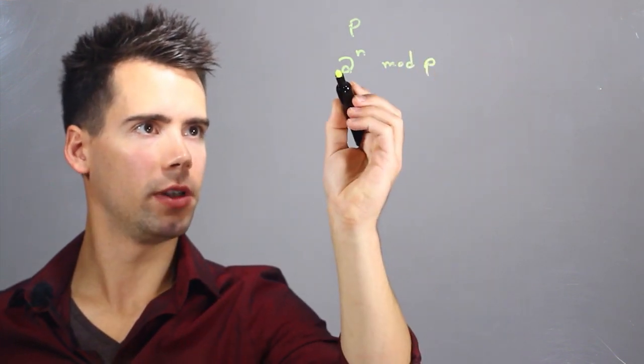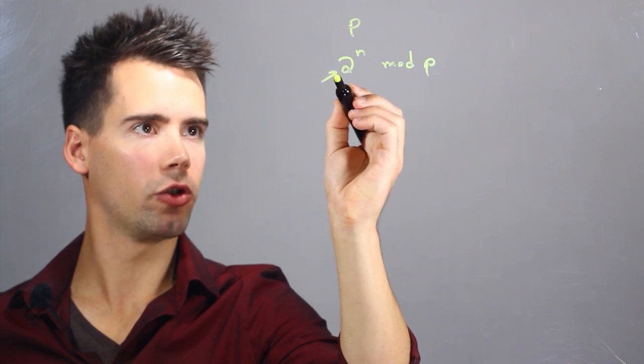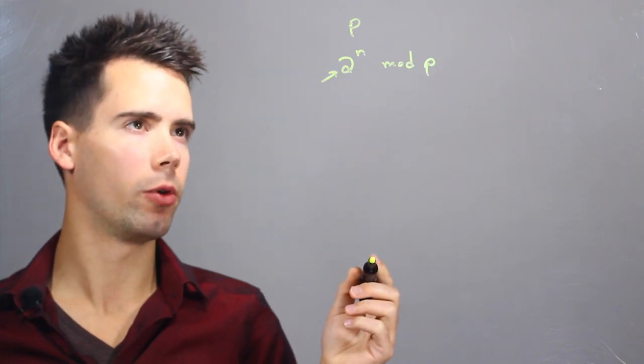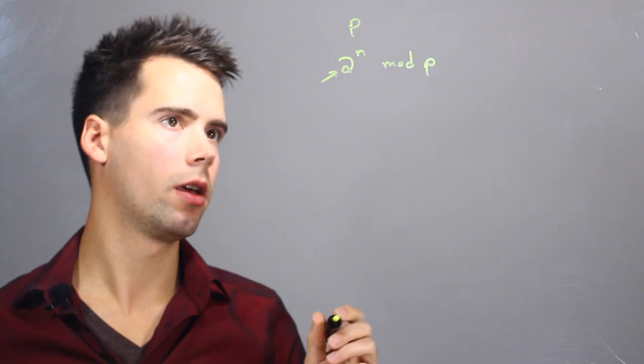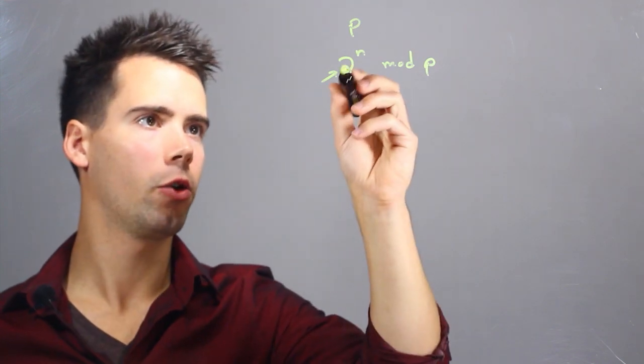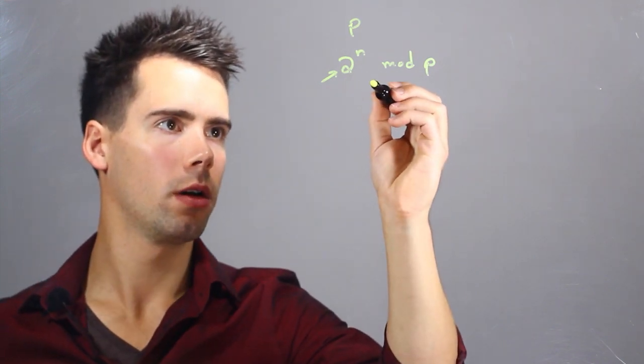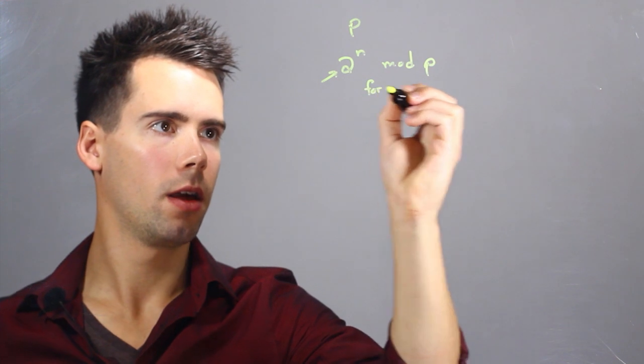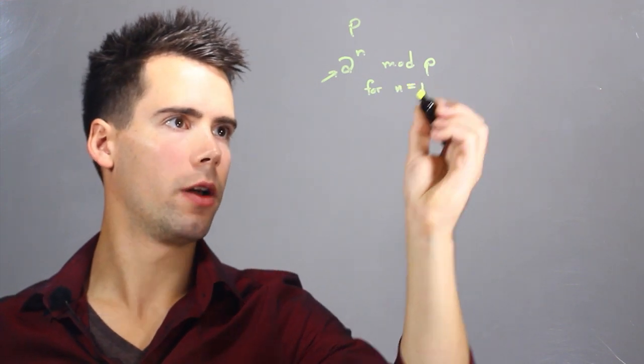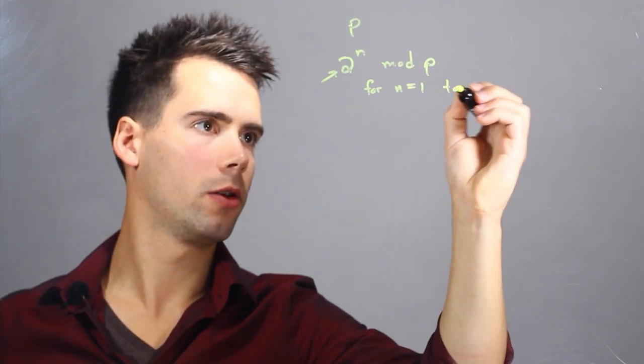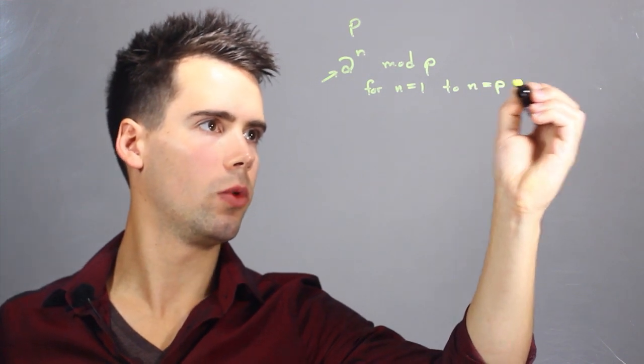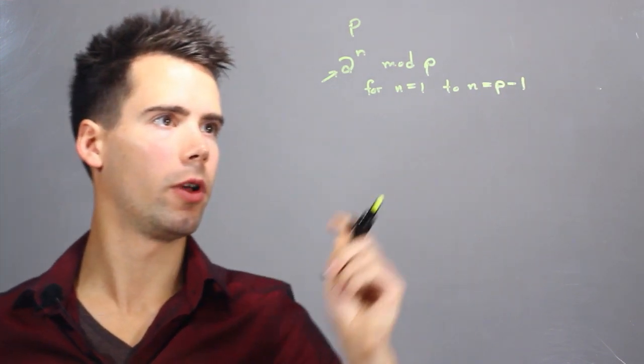In this example we've chosen 2 as our primitive root, so we're checking to see if 2 is a primitive root of the prime number p. What we have to do is look at this equation for n is equal to 1 to n equal to p minus 1.